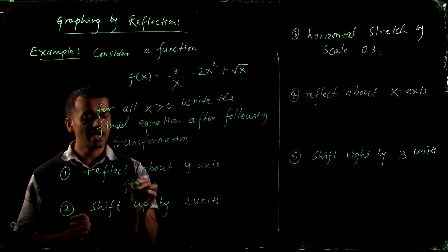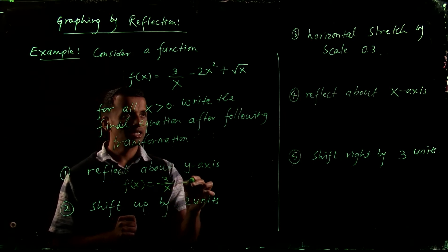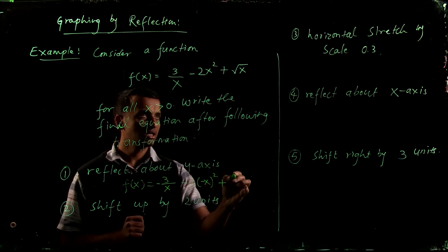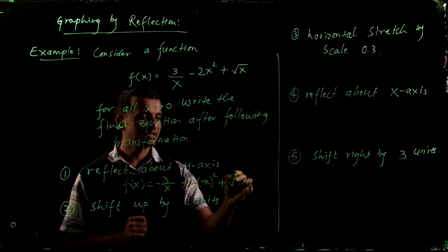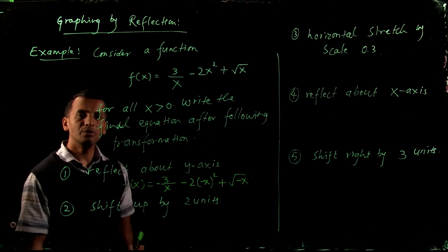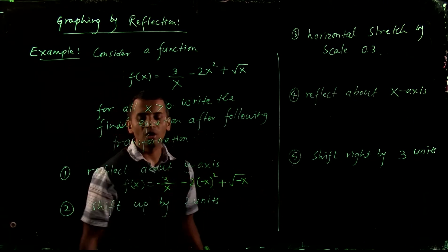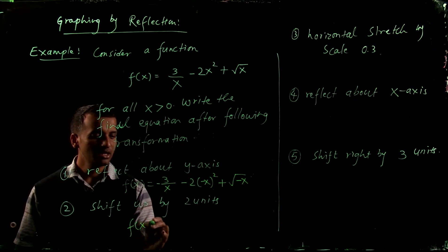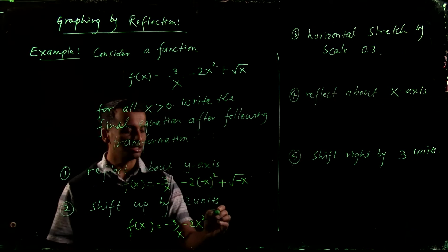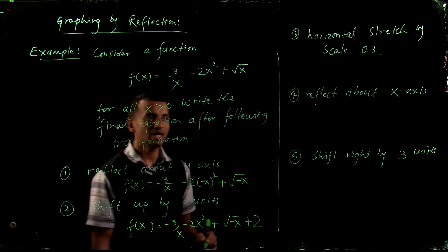Applying the y-axis reflection, f(x) equals 3 over negative x, which becomes negative 3 over x, minus 2 times negative x squared which is just 2x squared, plus square root of negative x. Next, shift up by 2 units — to shift up or down you add that number to the whole right-hand side. So f(x) equals negative 3 over x minus 2x squared plus square root of negative x, and then plus 2.